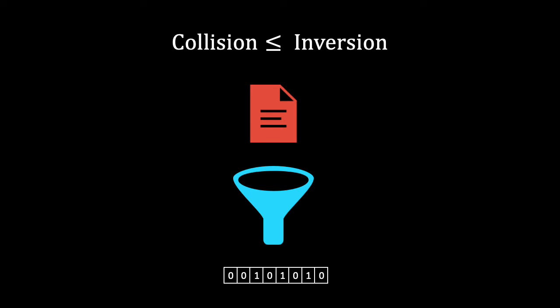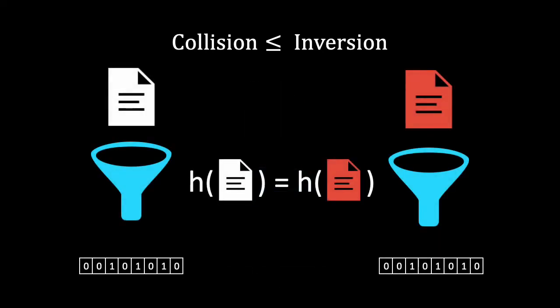This is because there are infinitely many potential inputs to the hash function. It is thus highly unlikely that we obtain the same input again. This leaves us with a collision and thus proves the reduction.